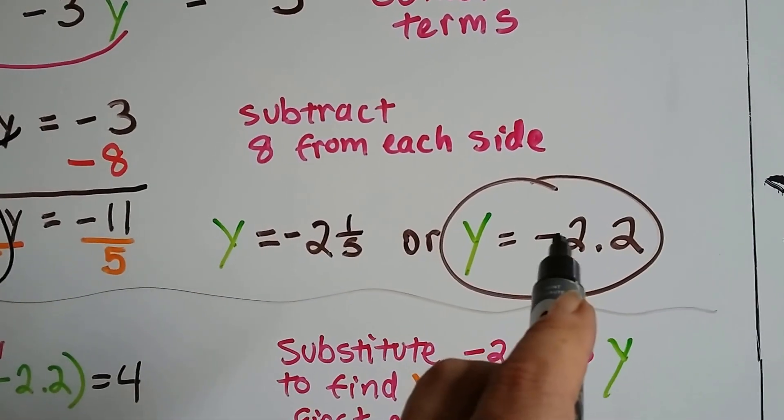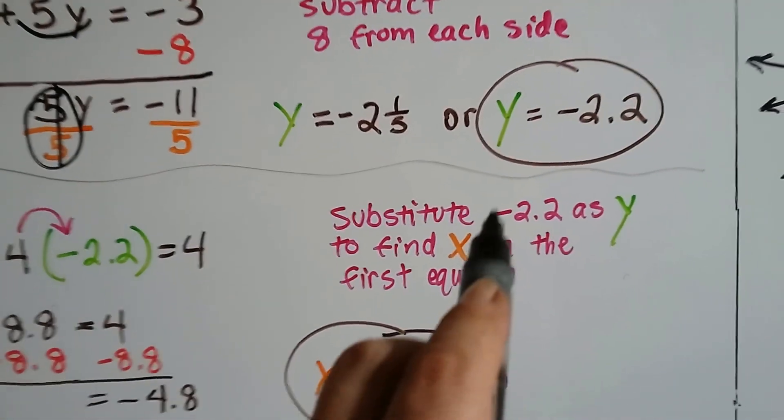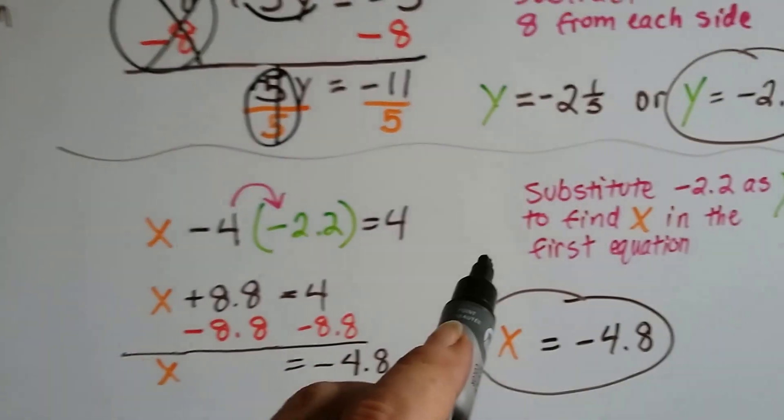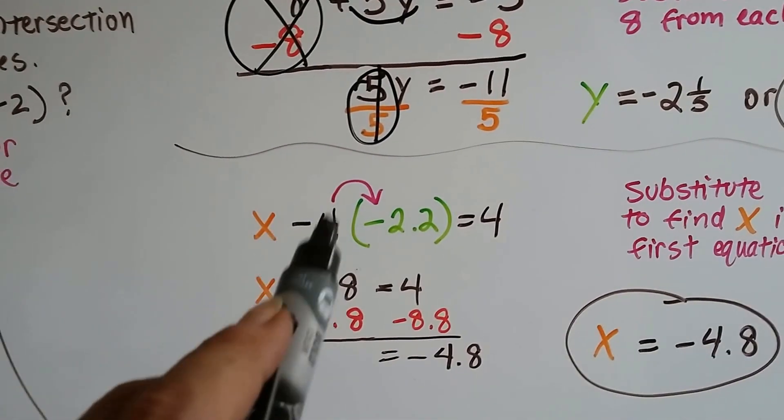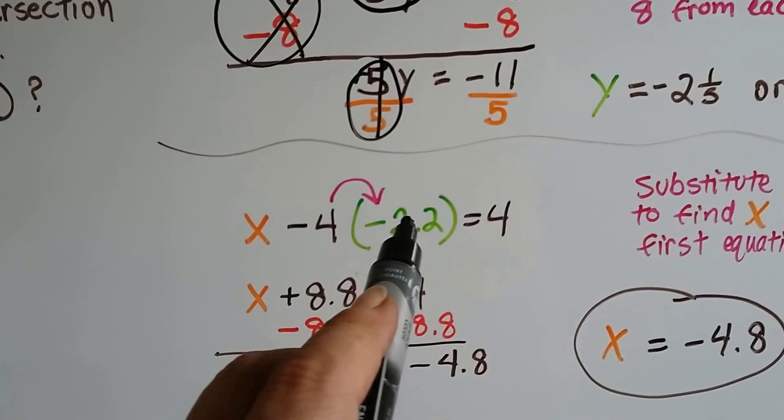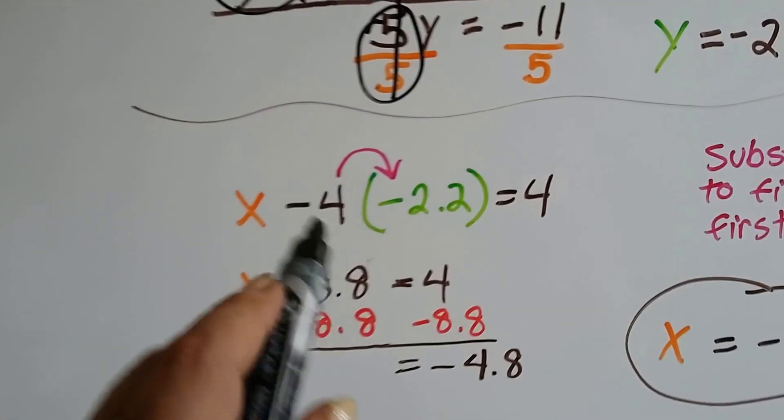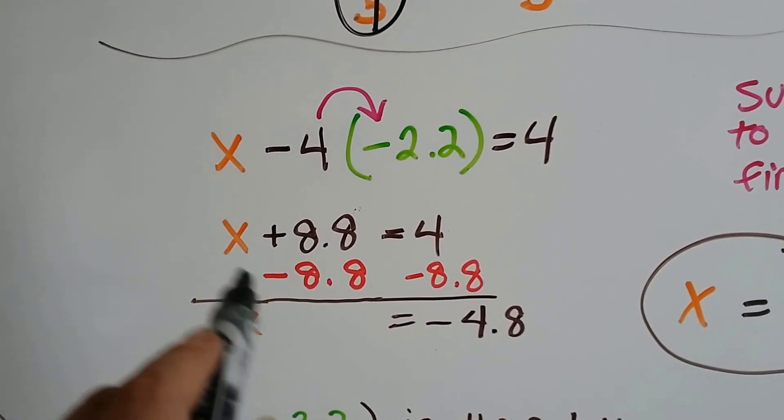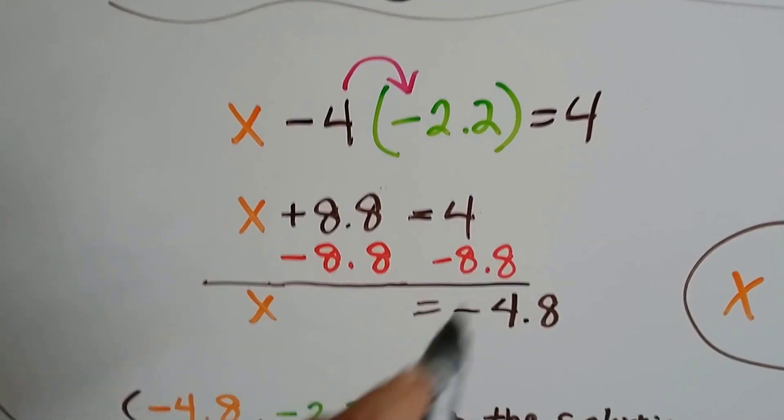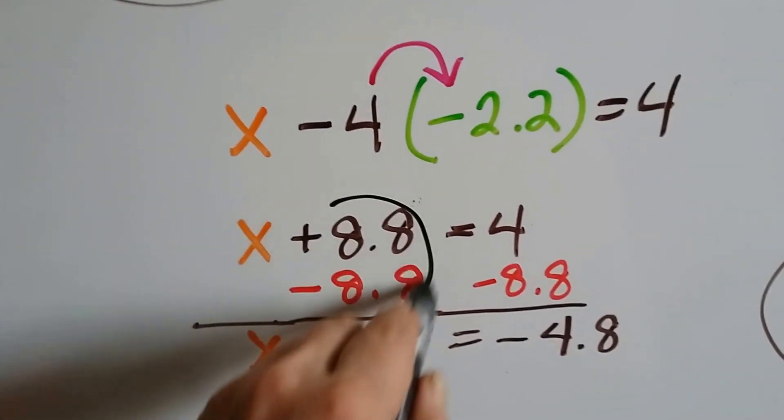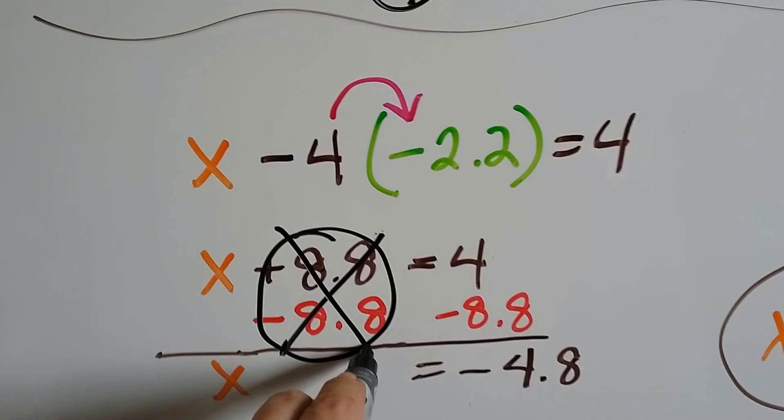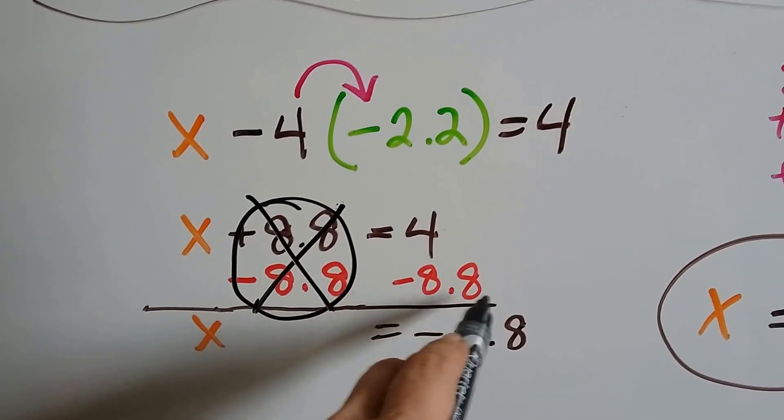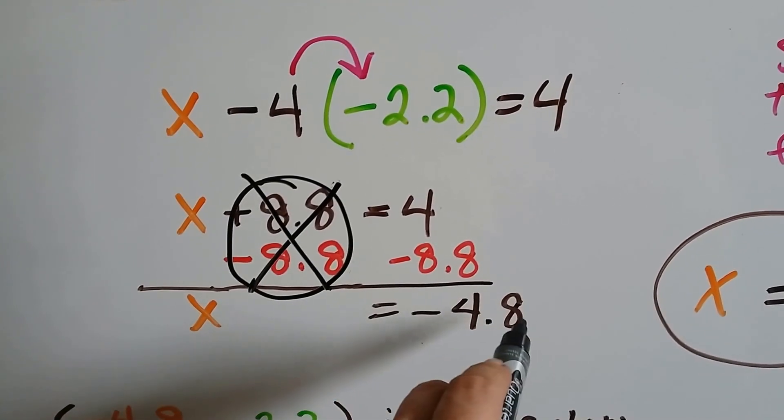Now we're going to use that negative 2.2 and substitute it as our y to find x in the first equation. That was x minus 4y equals 4. So now we put the negative 2.2 there and we do our multiplication. Negative 4 times negative 2.2 is a positive 8.8. x plus 8.8 equals 4. Now we could subtract 8.8 from each side, create a zero pair and eliminate that. And 4, a positive 4, take away 8.8 gives us a negative 4.8. That's our x.